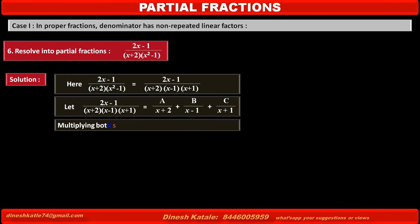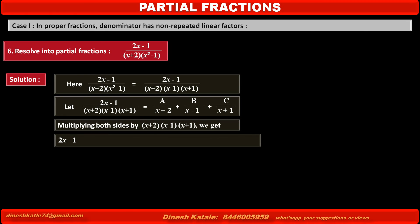Multiplying both sides by (x plus 2)(x minus 1)(x plus 1), which is the denominator of the given fraction, the left hand side cancels its denominator and becomes 2x minus 1. On the right hand side, multiplying the first term cancels its denominator x plus 2, so the first term becomes A into (x minus 1)(x plus 1).